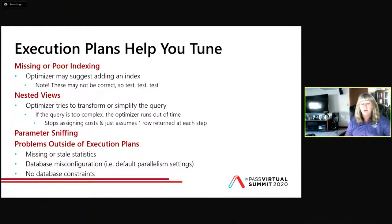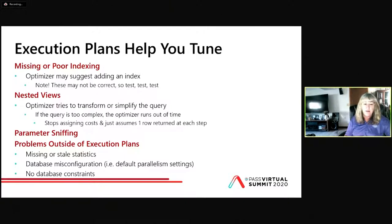Beware of parameter sniffing — on the first execution, the optimizer sniffs and saves that parameter. If you have data skew in the columns you're using, that sniffed value may not be the right one for every execution. Problems outside of the execution plan include missing or stale statistics, database misconfiguration (default parallelism settings are often left at unlimited, so everything runs parallel), and also no data constraints — database constraints can help the optimizer come up with a better plan.